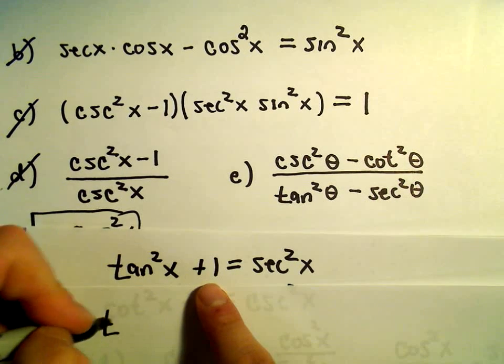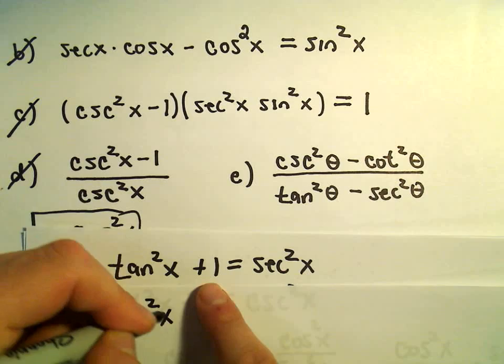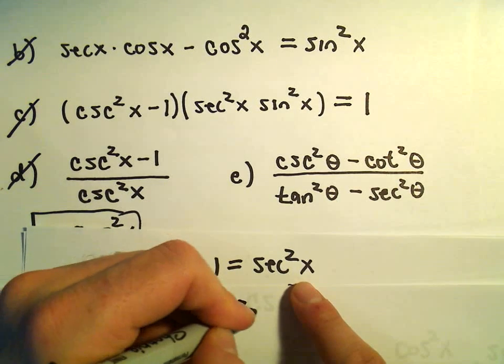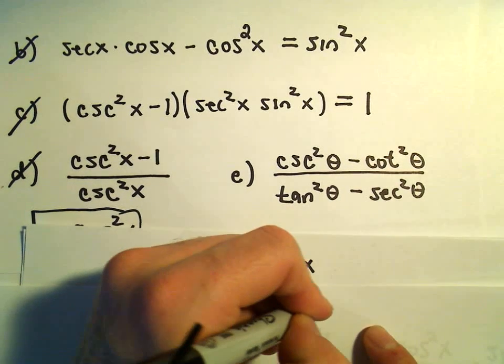We've got tangent squared theta minus secant squared. Well, I could subtract the secant squared over and that would give me tangent squared x minus secant squared x plus 1 equals 0.